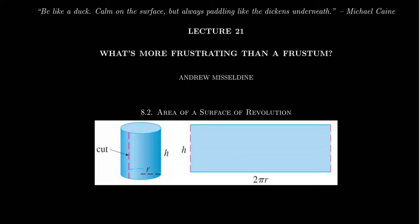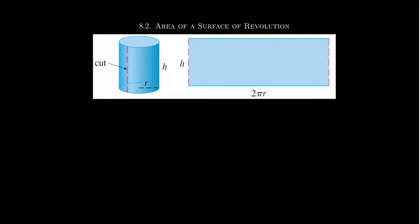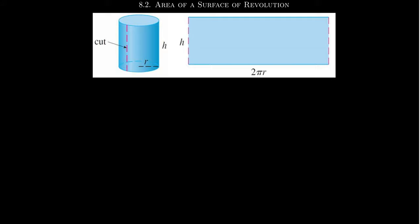A surface of revolution, unlike a solid of revolution, is formed when a curve is rotated about an axis of revolution. With solids of revolution we took a region and rotated it; this time we just rotate a curve, which is why arc length plays a critical role. The surface of revolution is really just the boundary of a solid of revolution, and our purpose in this lecture is to calculate the area of surfaces of revolution.